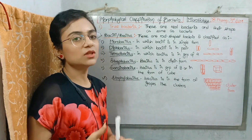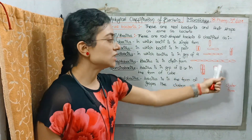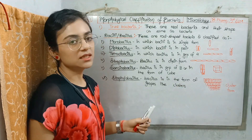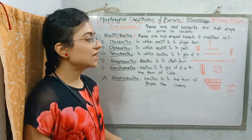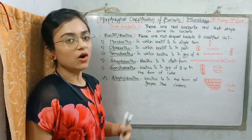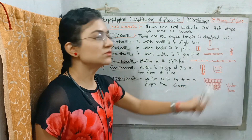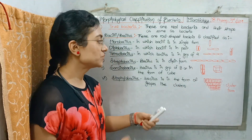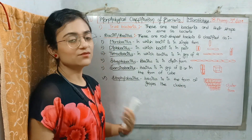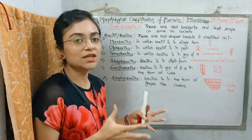Then there is Streptobacillus — the bacilli are in the form of a chain, linked together in a chain form. Then there is Sarsinobacillus — the bacillus is in the form of a cube structure, arranged in groups of 8. And finally, Staphylobacillus — this is a cluster of bacilli linked in the form of grapes.